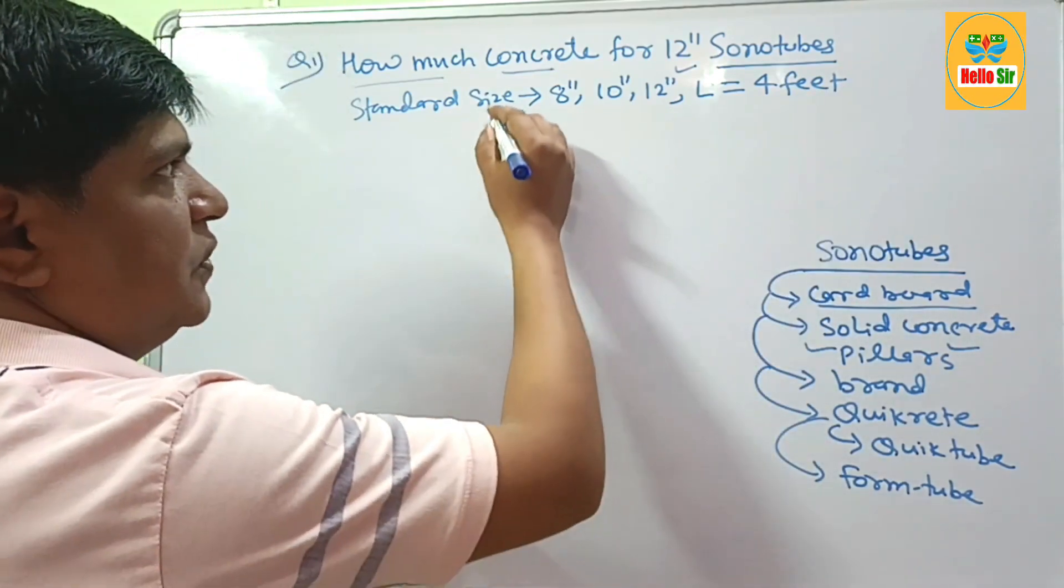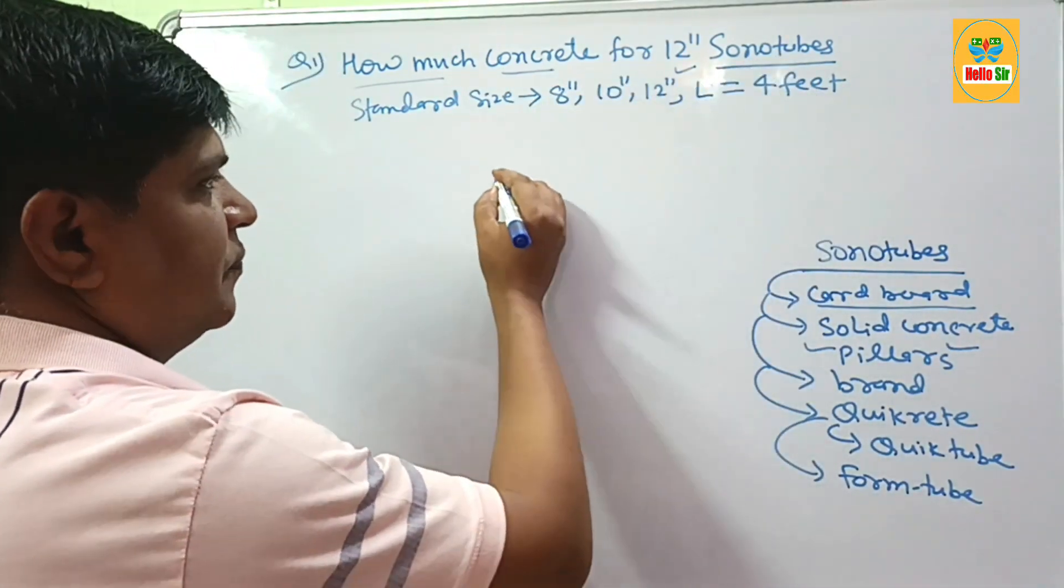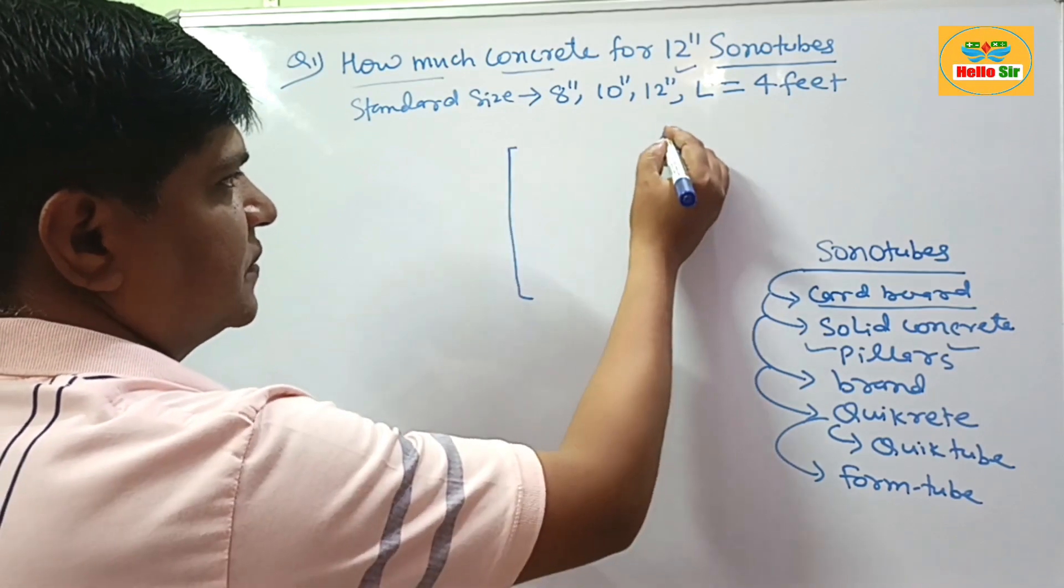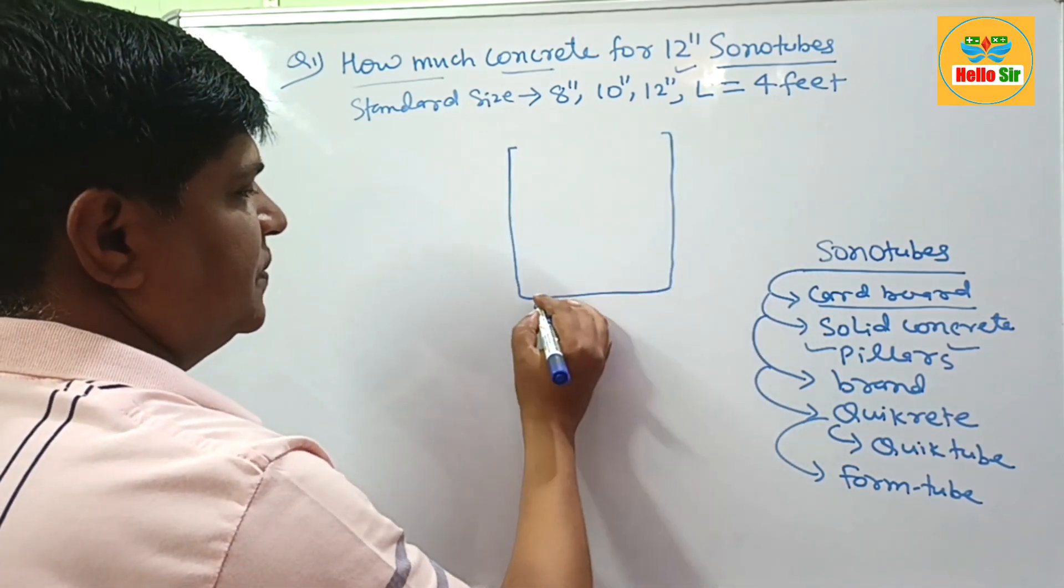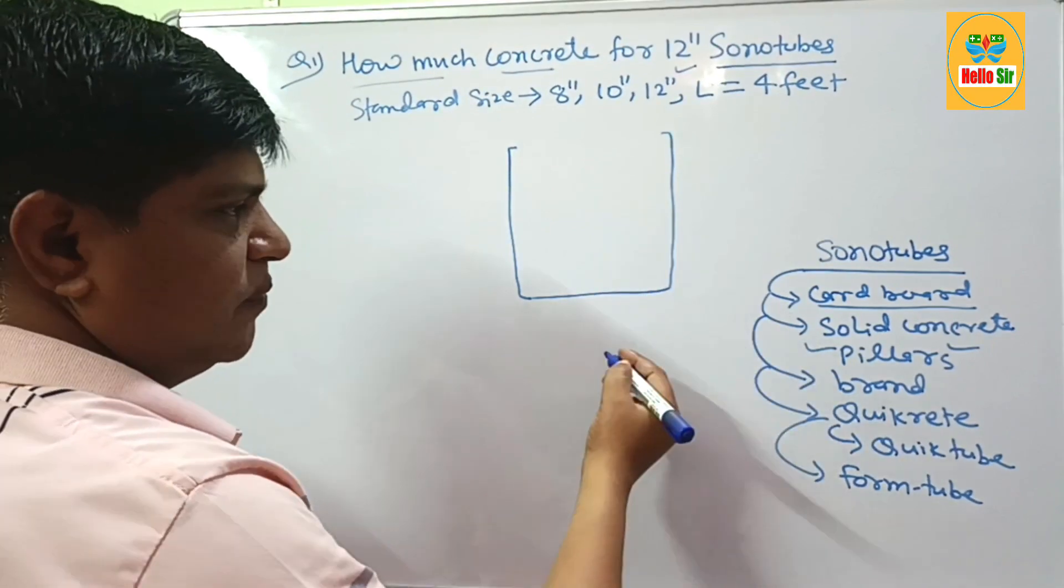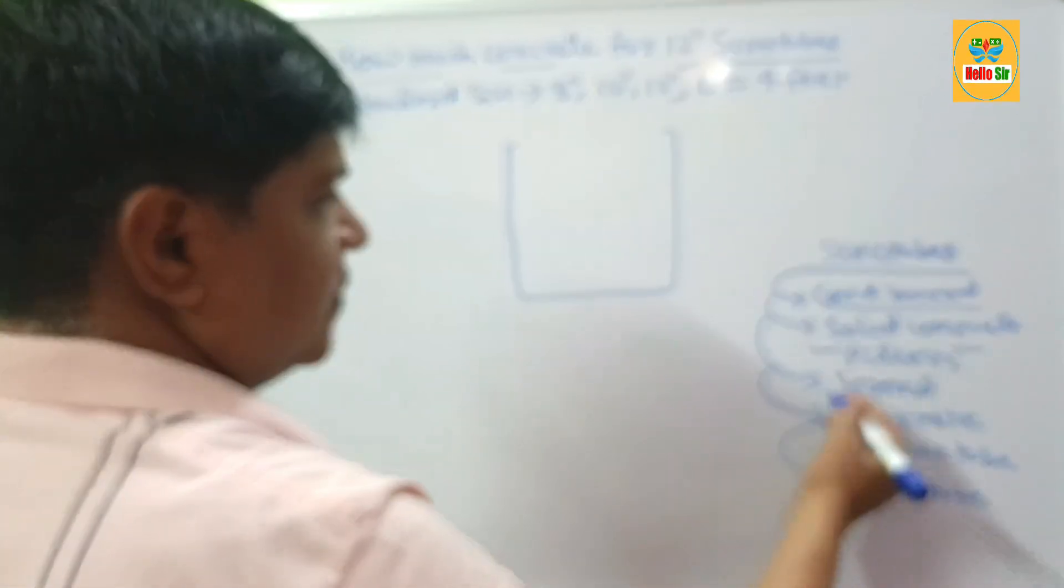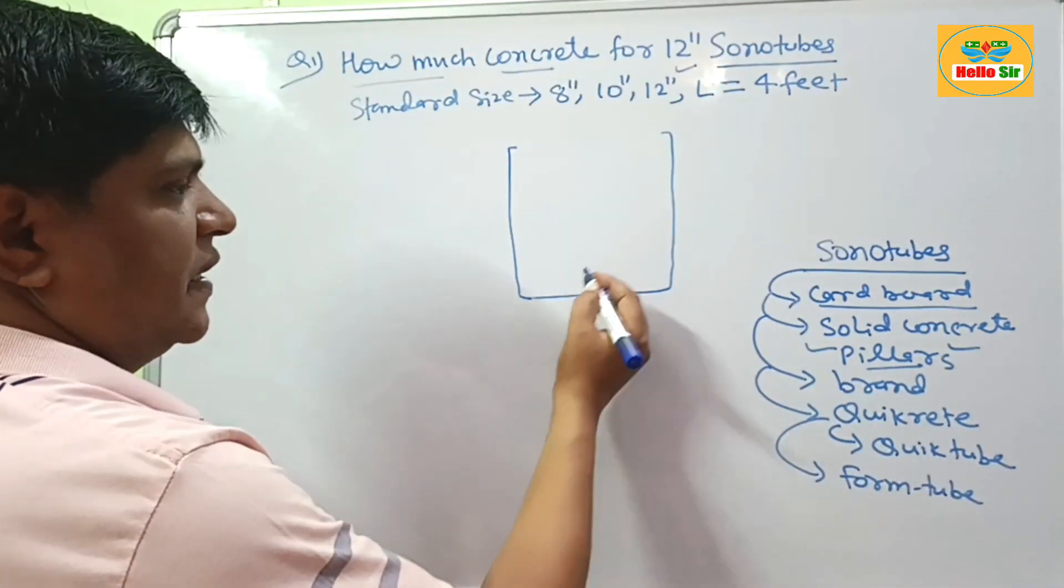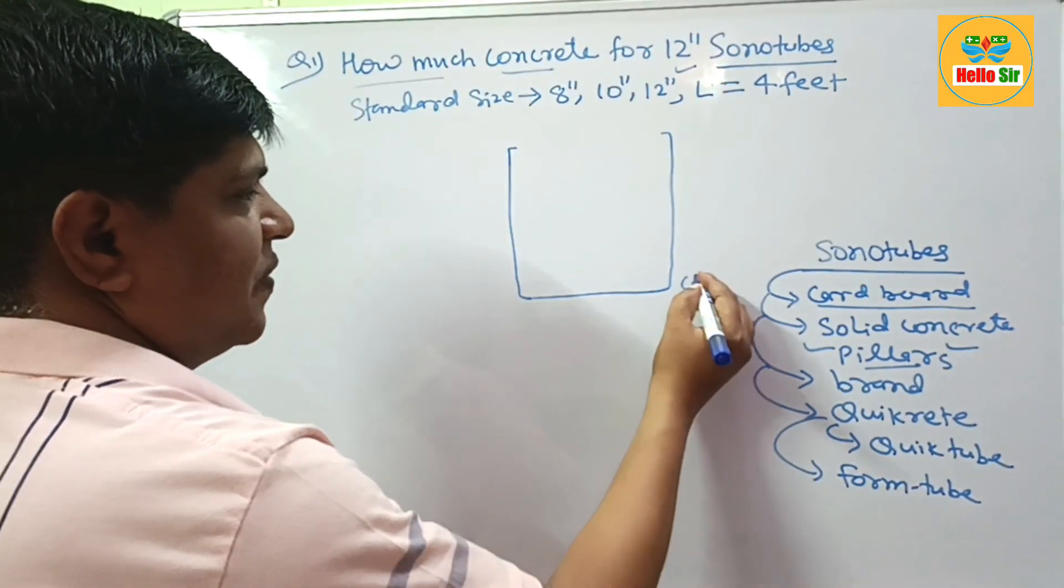How you can use the sonotubes? First, you should dig out the holes in the ground. Suppose this is a hole in the ground used for pillar casting. And up to a depth of 6 inches,